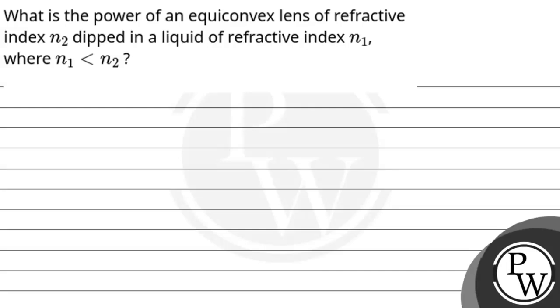Hello, let's read this question. The question says: what is the power of an equiconvex lens of refractive index N2 dipped in a liquid of refractive index N1, where N1 is less than N2?